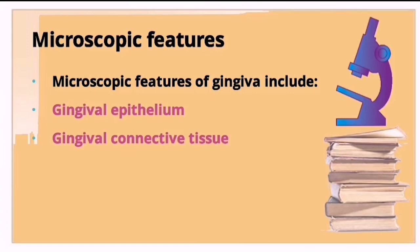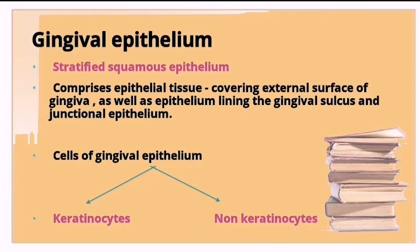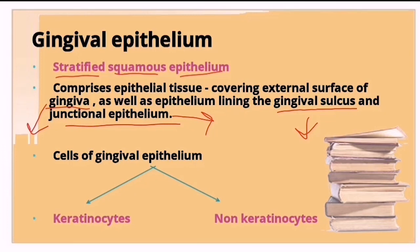Moving on to microscopic features: gingiva has gingival epithelium and gingival connective tissue. The gingival epithelium is a stratified squamous epithelium comprising the oral epithelium covering external surfaces, the sulcular epithelium lining the gingival sulcus, and the junctional epithelium. Before discussing these three types, we must understand the cells present in gingival epithelium.